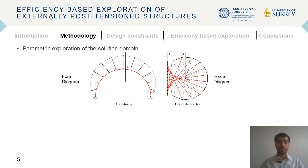The solution space for externally post-tensioned structures can be explored parametrically. For curved structures, Todisco showed that two parameters can be chosen freely. In this work, those two parameters are the eccentricity of the post-tensioning system at mid-span and the magnitude of the horizontal reaction. For straight structures, only one parameter remains available — in this case, the eccentricity.